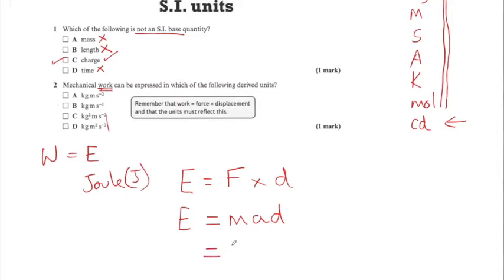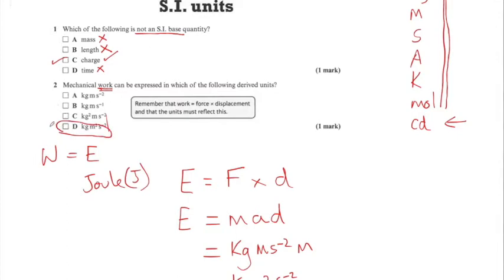The unit of mass is the kilogram. The unit of acceleration is metres per second squared, and the unit of distance is the metre. Putting these together, you end up with kilograms, two metres — that's metres squared — and S minus two. So the answer is kg·m²·s⁻², which is answer D.